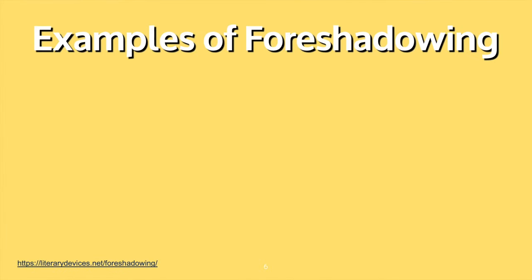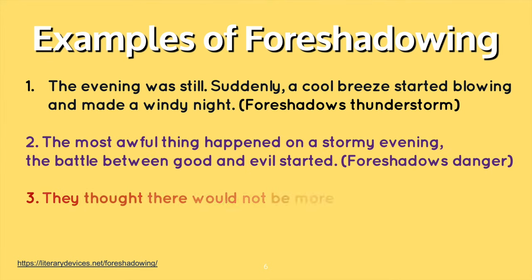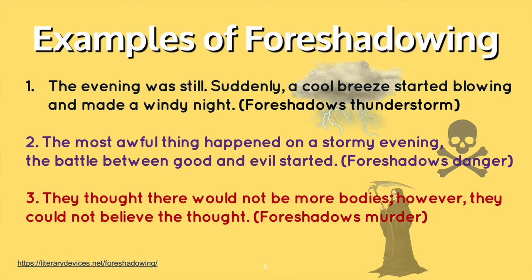Here are some examples of foreshadowing. 'The evening was still. Suddenly, a cool breeze started blowing and made a windy night' — this foreshadows a thunderstorm. 'The most awful thing happened on a stormy evening. The battle between good and evil started' — this foreshadows danger. 'They thought there wouldn't be more bodies. However, they could not believe the thought' — this foreshadows murder.